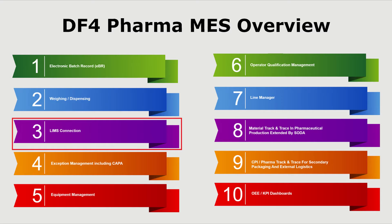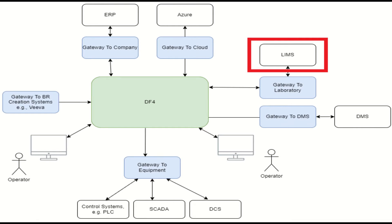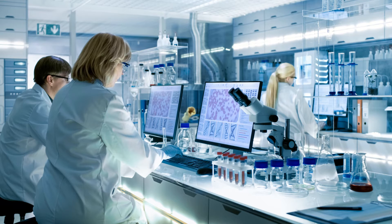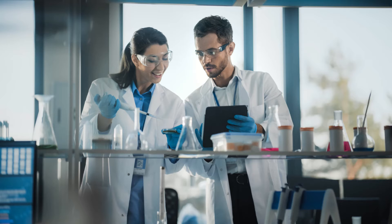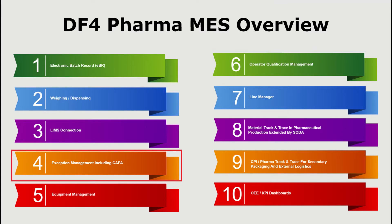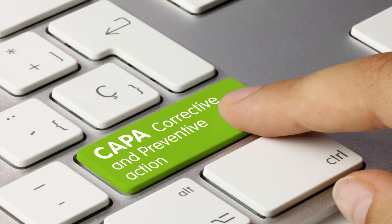DF4 Pharma MES connection to a Laboratory Information Management System, also known as LIMS, is an important feature for pharmaceutical production. LIMS enables the efficient management of laboratory data and workflows. The connection of LIMS to DF4 Pharma MES facilitates seamless data transfer between these systems. Exception management including Corrective and Preventive Actions, in short CAPA, is an important component of DF4 Pharma MES. It helps to identify and resolve deviations or exceptions in the production process, enabling a proactive approach to quality management.